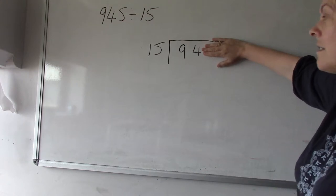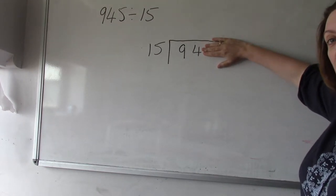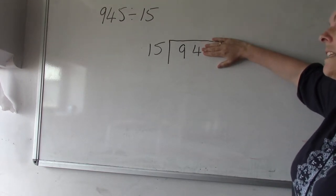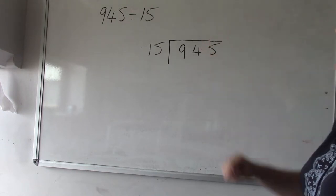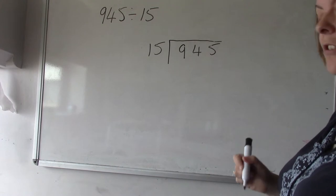And then we're going to look at the next number along. So instead of looking at how many 15s were in 9, we're going to look at how many 15s were in 94. Probably quite a few, but you need to know your times tables in order to do this bit.